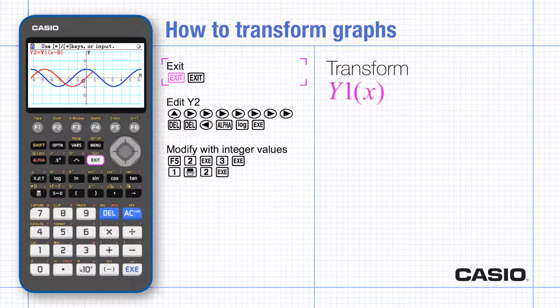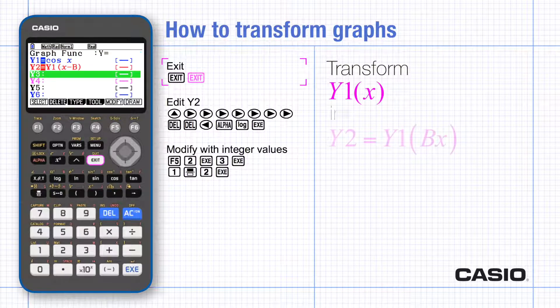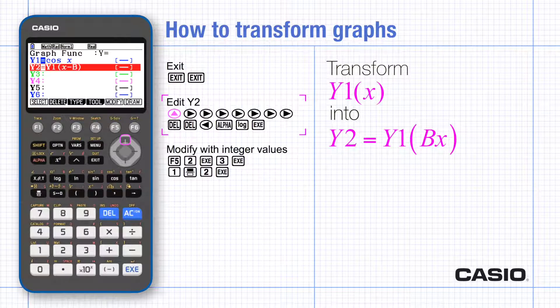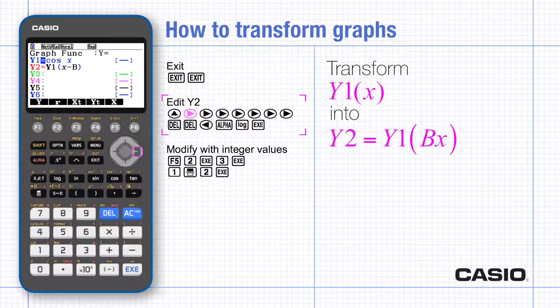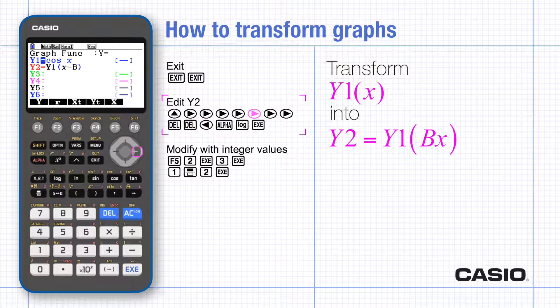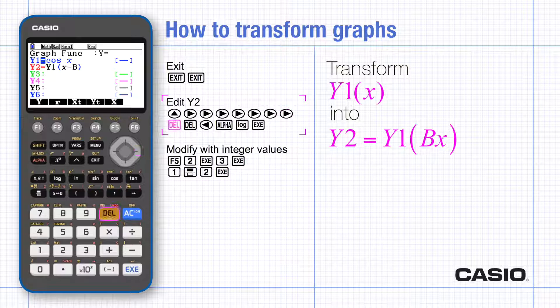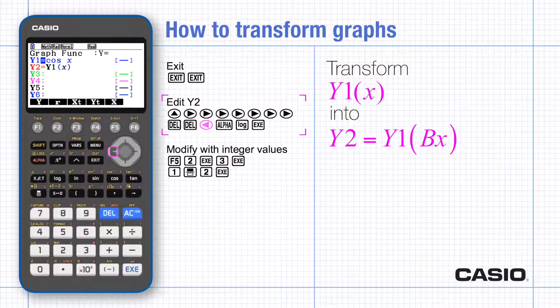Exit modify and then exit graph and now edit y2 by highlighting it and scrolling sideways past the parts that need changing and delete. Scroll to put b in the correct place and then enter.